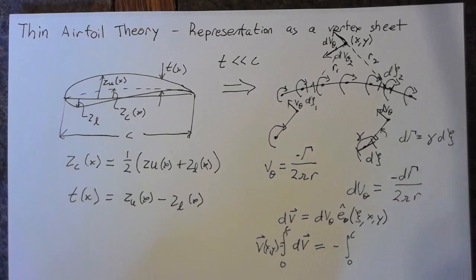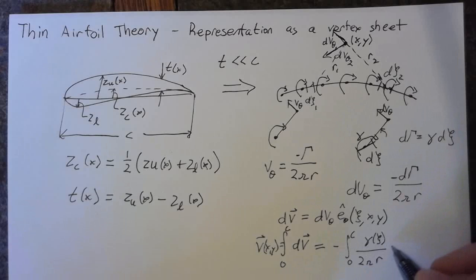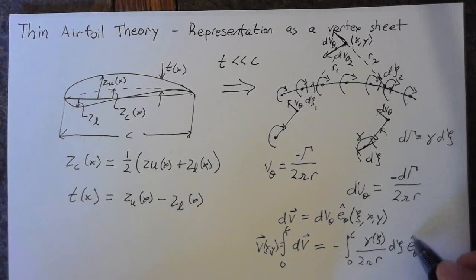Of gamma, which is a function of xi, over 2 pi r. And if we wanted to, we could write this as a function of x, y, and xi. And then we'll have some d xi, and then we need the direction. So this will be e theta, and e theta is going to be a function of xi, x, and y.